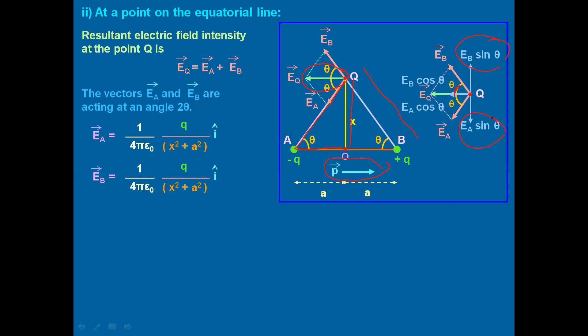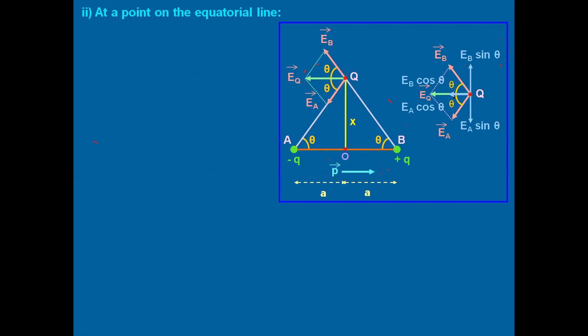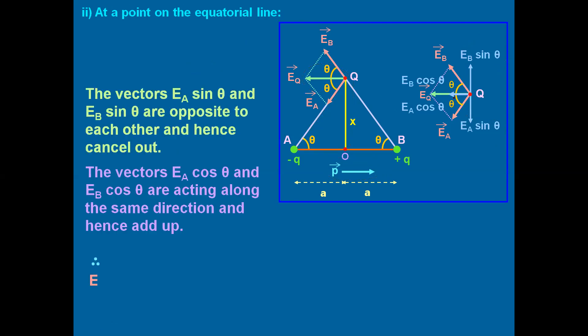Of these four components, Eb·sinθ and Ea·sinθ act in opposite directions. Since their magnitudes are equal and they act in opposite directions, they cancel each other and their resultant is zero. Whereas Eb·cosθ and Ea·cosθ both act along the same direction, so their resultant is the sum of both. Therefore, the resultant vector of Eb and Ea is Eb·cosθ + Ea·cosθ, and we can write: Eq = Ea·cosθ + Eb·cosθ.